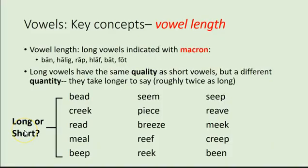Now one of the key concepts you have to understand when thinking about Old English is the idea of vowel length as distinctive. This is not something we have in Modern English — all of our long vowels have different qualities than our short vowels. In Old English you might have a word like 'beat' and 'beat,' where they have the same quality but a different quantity. Vowel length means some vowels simply take about twice as long as others to say.